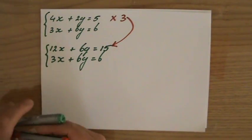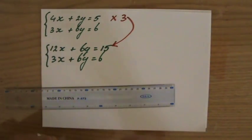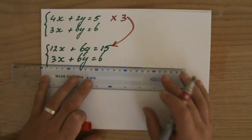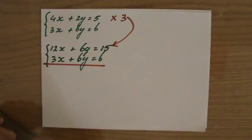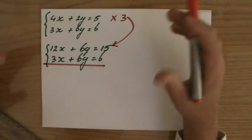And this is still equivalent. But I've manipulated it so I can work with it. Because now those coefficients of y are the same. They're both 6. So let me put a line there. And I have to decide now do I add or do I subtract?